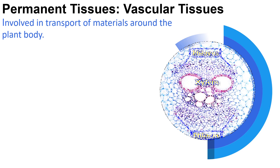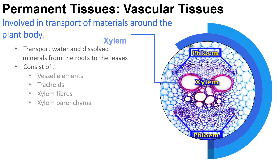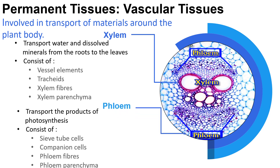Vascular tissues are involved in the transport of materials around the plant body. There are two types: xylem and phloem. Xylem functions to transport water and dissolved minerals from the roots to the leaves, and consists of vessel elements and tracheids. Phloem plays a major role in transporting the products of photosynthesis to the rest of the plant body, and is made up of sieve tubes and companion cells.